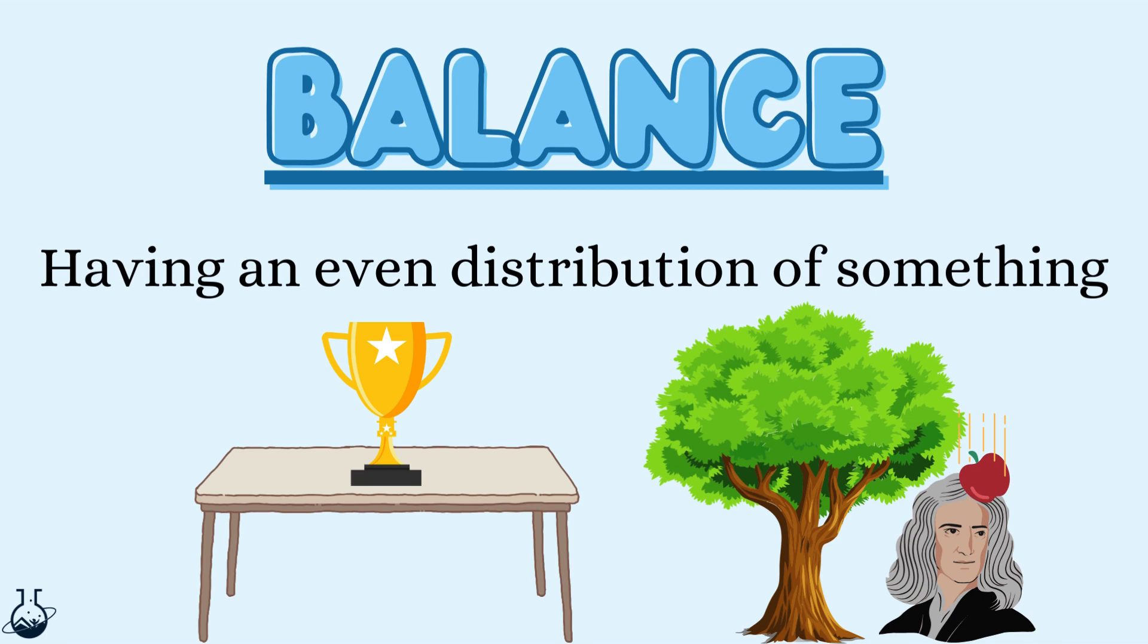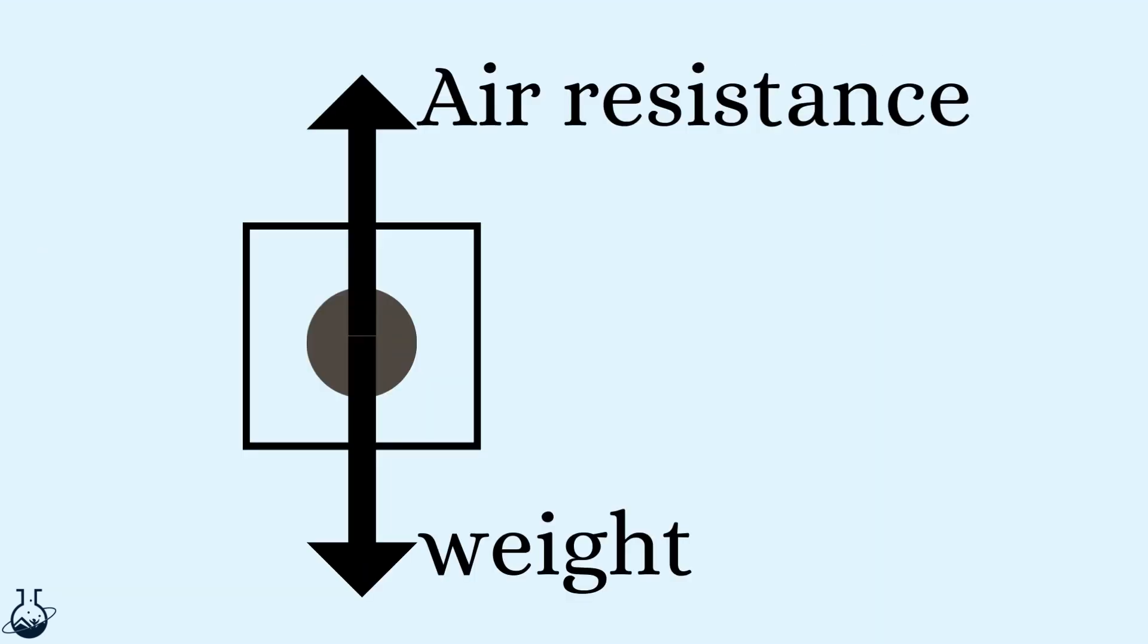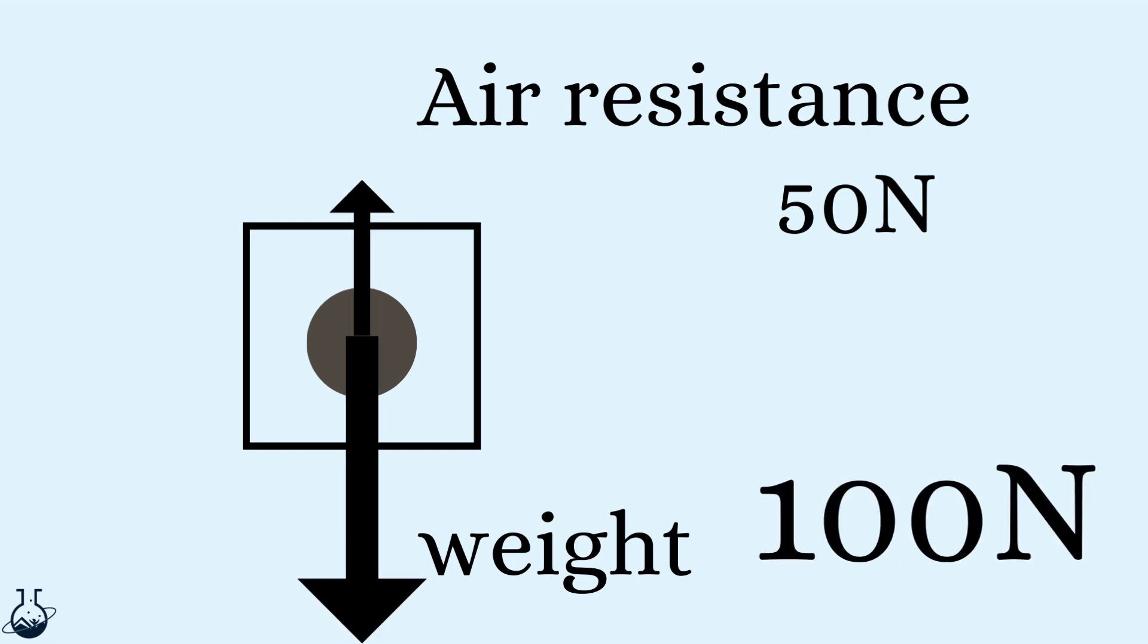Take this apple for example. It always has the force of gravity acting on its mass, otherwise known as weight. But as it falls, air particles collide with it, causing air resistance. Let's say the apple weighs 50 Newtons and air resistance is also 50 Newtons. These forces are the same. They are balanced. But say you drop a melon, which is 100 Newtons, the forces are no longer balanced. This can have an effect on how an object moves, its motion.